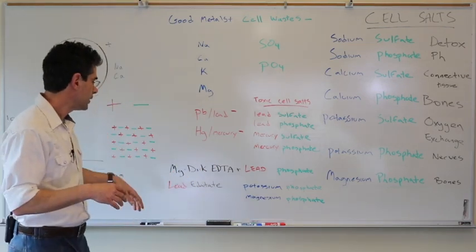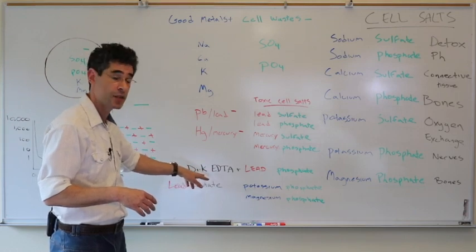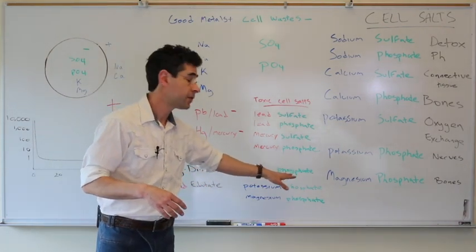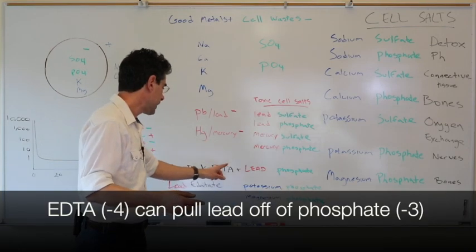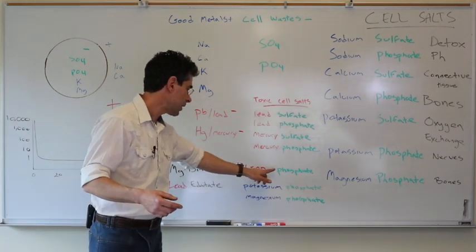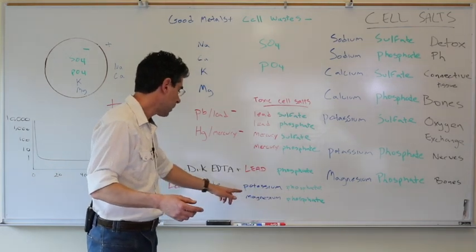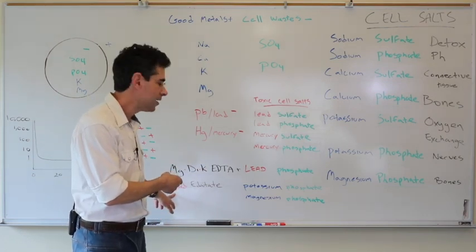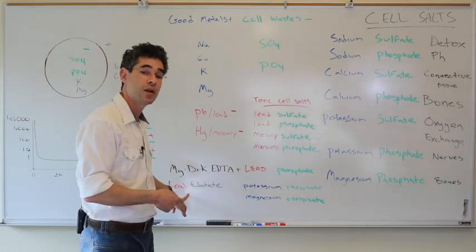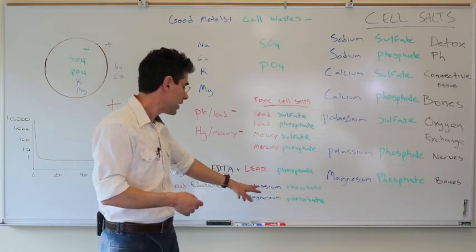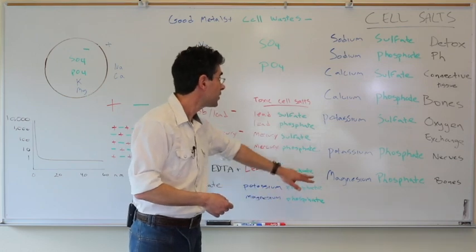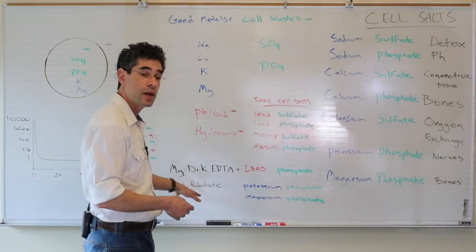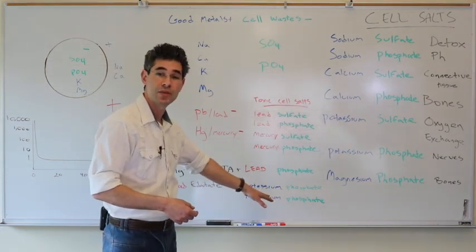Well, one thing you could do is you could take something like magnesium dipotassium EDTA. That means one magnesium, two potassiums, EDTA. And let's say you take this and it bumps into some lead phosphate as an example. What will happen? Well, the lead is going to attach to the EDTA forming lead editate, and the magnesium will attach to the phosphate and the potassium will attach to the phosphate. So you'll get potassium phosphate and magnesium phosphate. Now the lead editate is soluble. This will dissolve in water. Lead phosphate will not dissolve in water. Lead editate dissolves in water, which means you can now urinate this out. And the potassium phosphate helps the nerves and the magnesium phosphate goes into the bones. So we can turn a toxic salt, lead phosphate, into a water-soluble toxin that will leave and two nutritional elements. So far so good.